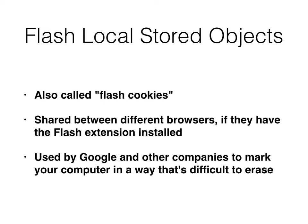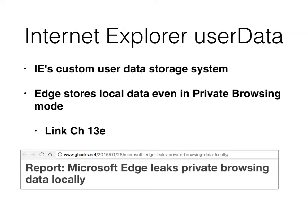Then there's flash cookies — locally stored objects. The original thing I heard was this is one of the first ways Google would mark your machine. Even though you clear your cookies, you haven't gotten rid of Google because their business model relies on knowing who you are. One fun thing about flash cookies is even if you change browsers, it doesn't change the value of the flash cookies as long as the other browser has Flash — you're sharing the same flash module. IE can store custom user data in a file system location. Edge apparently stores data here even when you're in private browsing mode.